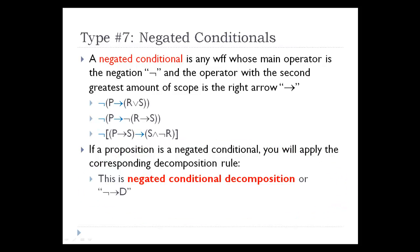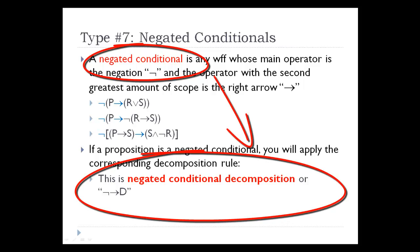The same process follows for negated conditionals. A negated conditional is any well-formed formula whose main operator is the sign for negation, and the operator with the next greatest amount of scope will be the right arrow. When we see any propositions that have this form, we classify them as negated conditionals, and the corresponding truth tree decomposition rule to apply is negated conditional decomposition.